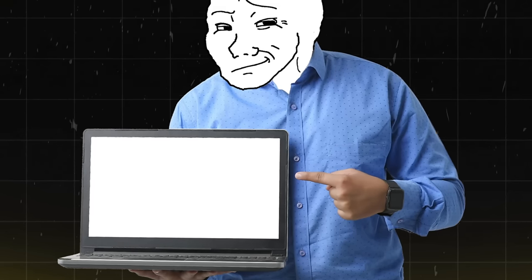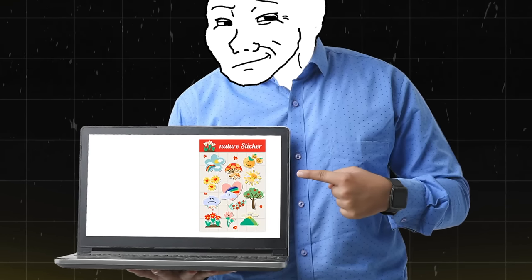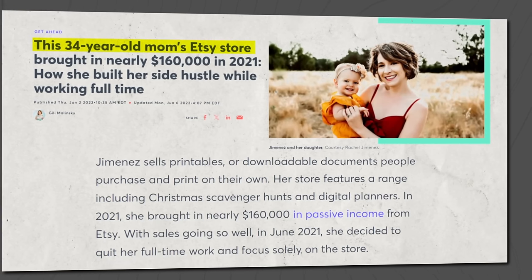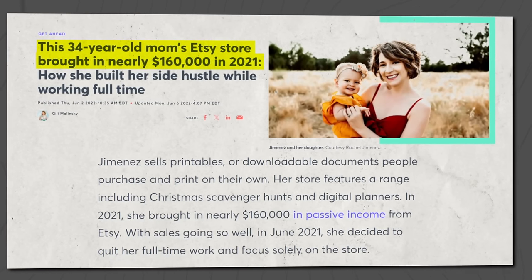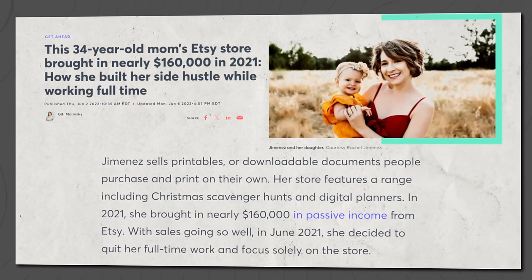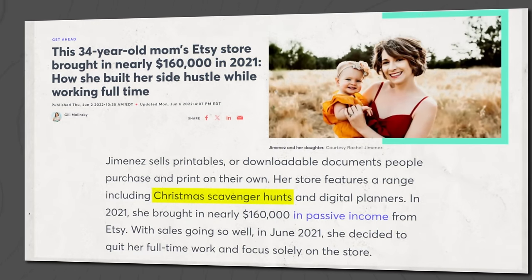Next is unique printables. This could be anything from digital designs for wall art, greeting cards, stickers, coloring books, etc. There are so many examples online — for instance, one mom makes six figures through her Etsy side hustle, bringing in $160,000 in one year in passive income, selling anything from Christmas scavenger hunts to digital planners.